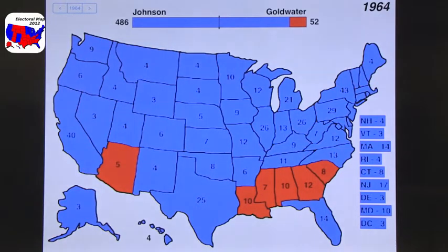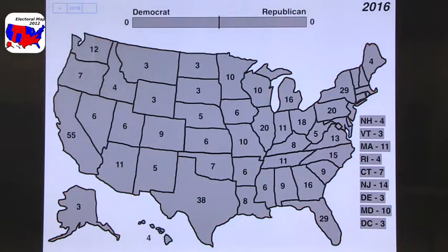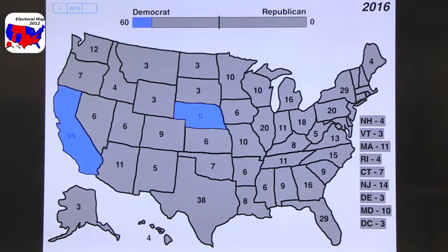You can switch over and go to the current election and create a prediction based on your understanding of what's going on. You can say California will go Democrat or Nebraska will go Democrat — not very likely, but it might happen. There are ways to manipulate this graphic to create a prediction of the current election or even follow along as you hear election results or look at polls. This is a way to get a sense of what the electoral map looks like and how many electoral votes each state has.